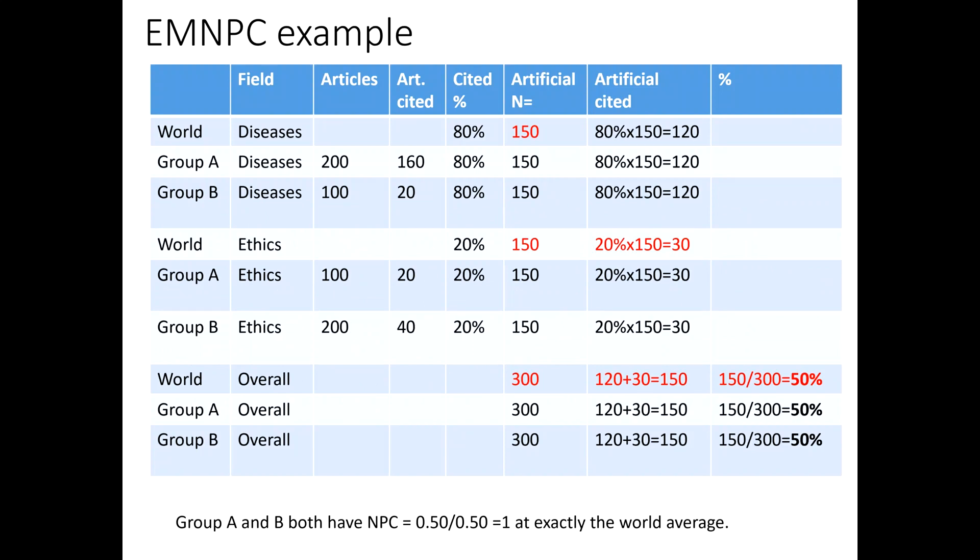Here's a full EMNPC calculation. We calculate the percentage cited for the world and each group for each field-year combination. We then calculate the artificial sample sizes separately for each group — both turn out to be 150. We calculate the artificial numbers cited, including for the world. Then we calculate the proportion cited for the world and each group, and divide each group's percentage by the world percentage. In this example, both groups end up with an EMNPC score of one — exactly world average.